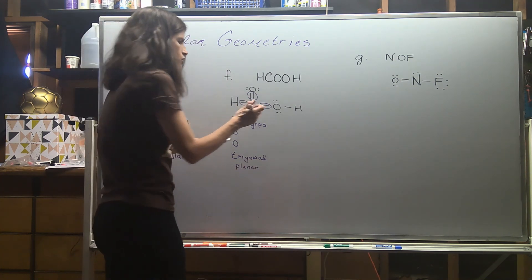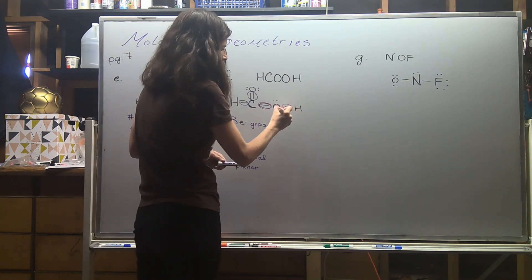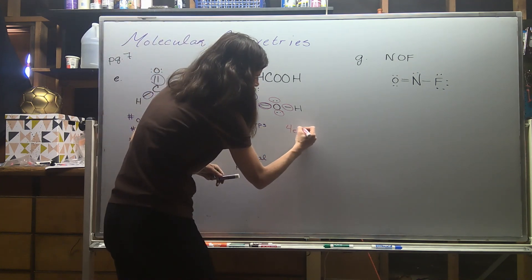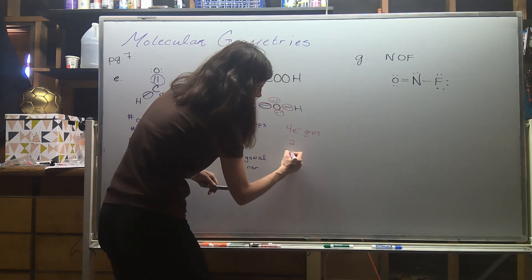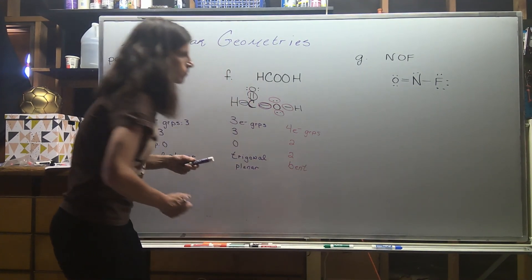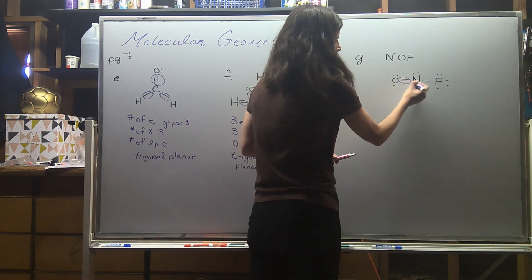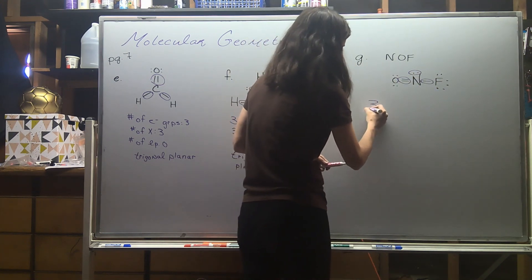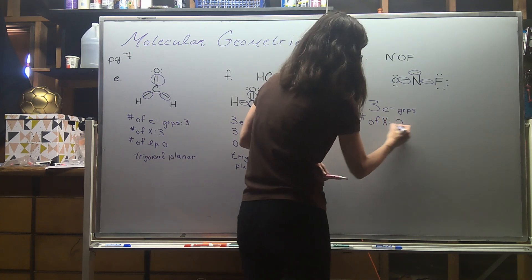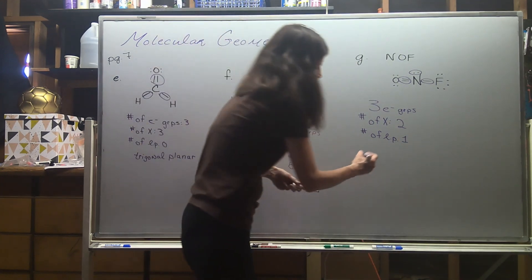The second central atom is the oxygen. Circling everything directly attached to it — I've located four electron groups. Two of them are involved in bonding, so the number of X's is two, and there are two lone pairs. The 4-2-2 combination is always going to be a bent molecular geometry. In the last example, nitrogen is our one central atom with three electron groups: two are bonding and one is a lone pair. A 3-2-1 combination is also a bent molecular geometry.